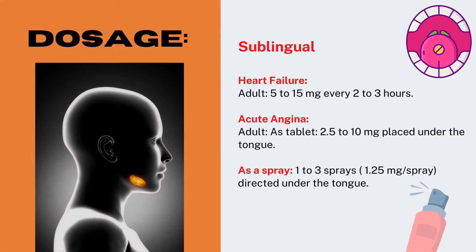Sublingual for heart failure — Adult: 5 to 15 mg every 2 to 3 hours. Acute angina — Adult: as tablet, 2.5 to 10 mg placed under the tongue; as a spray, 1 to 3 sprays (1.5 mg per spray) directed under the tongue.